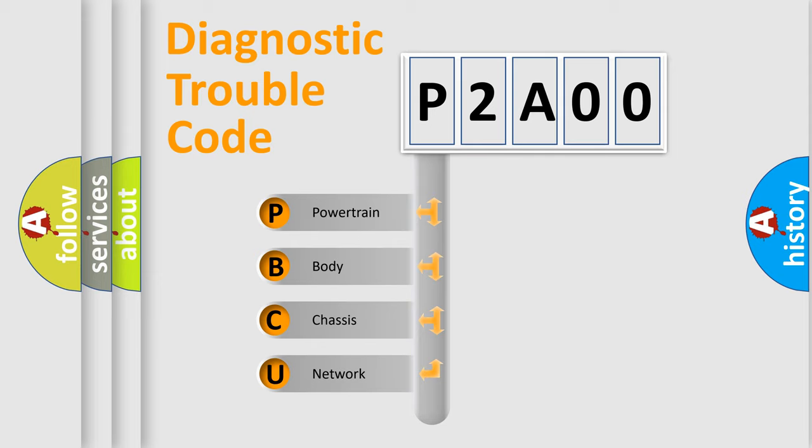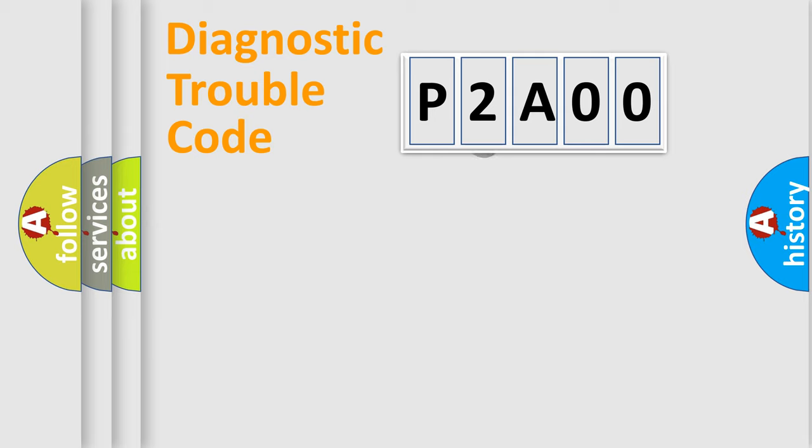We divide the electric system of automobile into the four basic units: Powertrain, Body, Chassis, Network. This distribution is defined in the first character code.